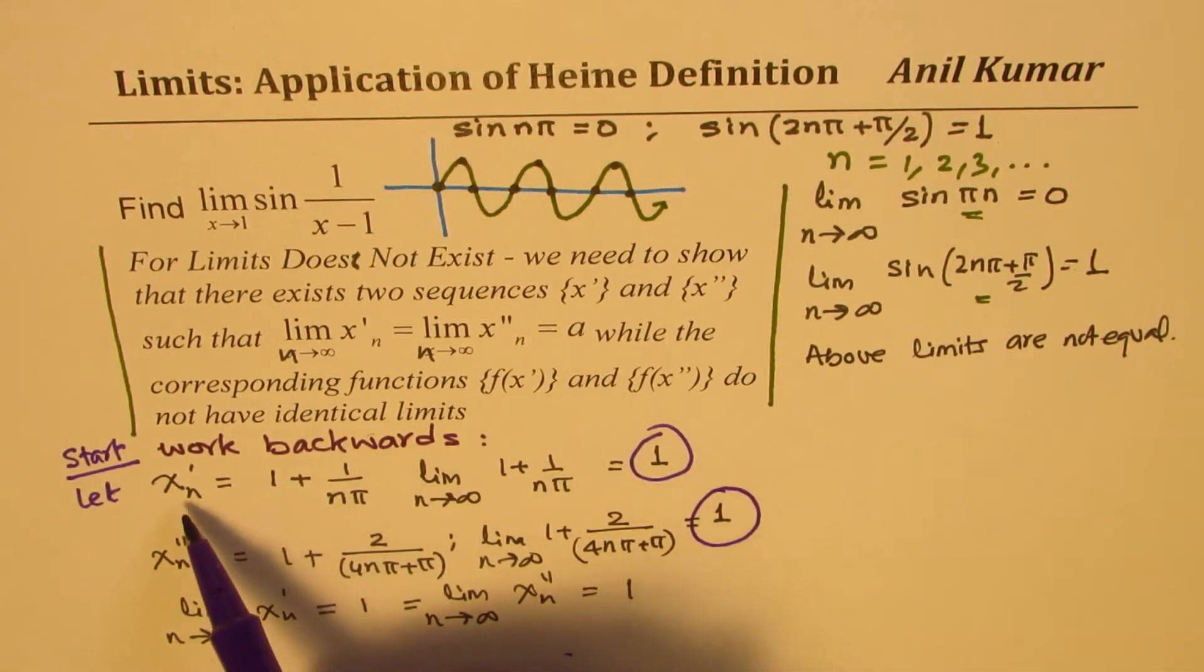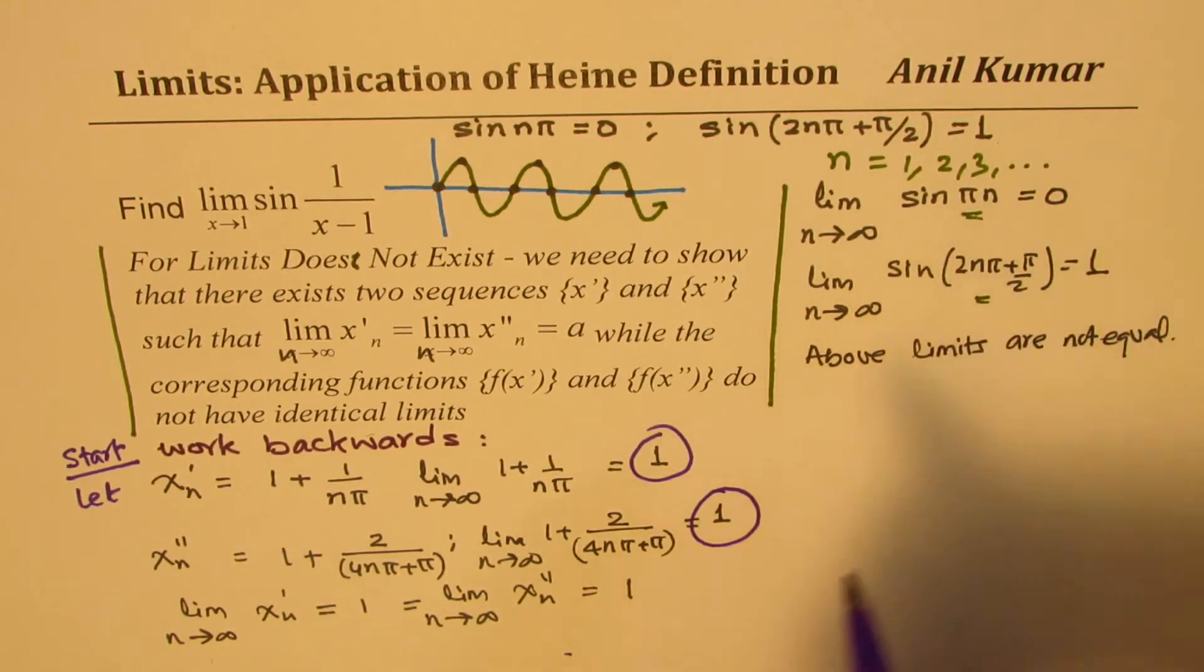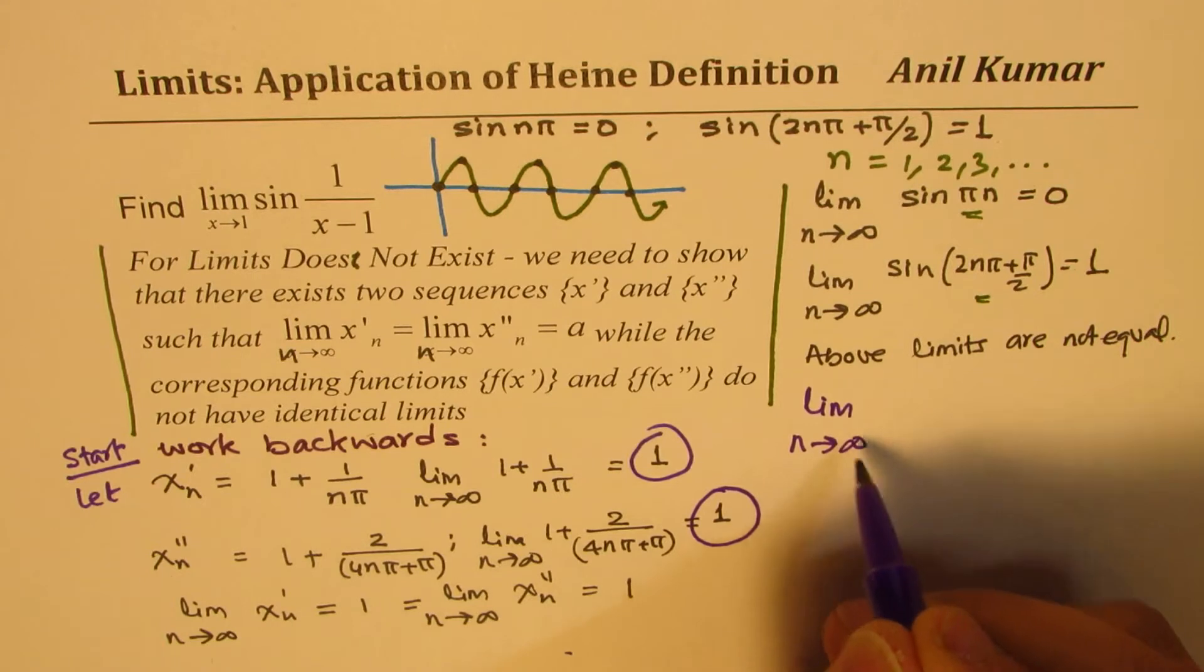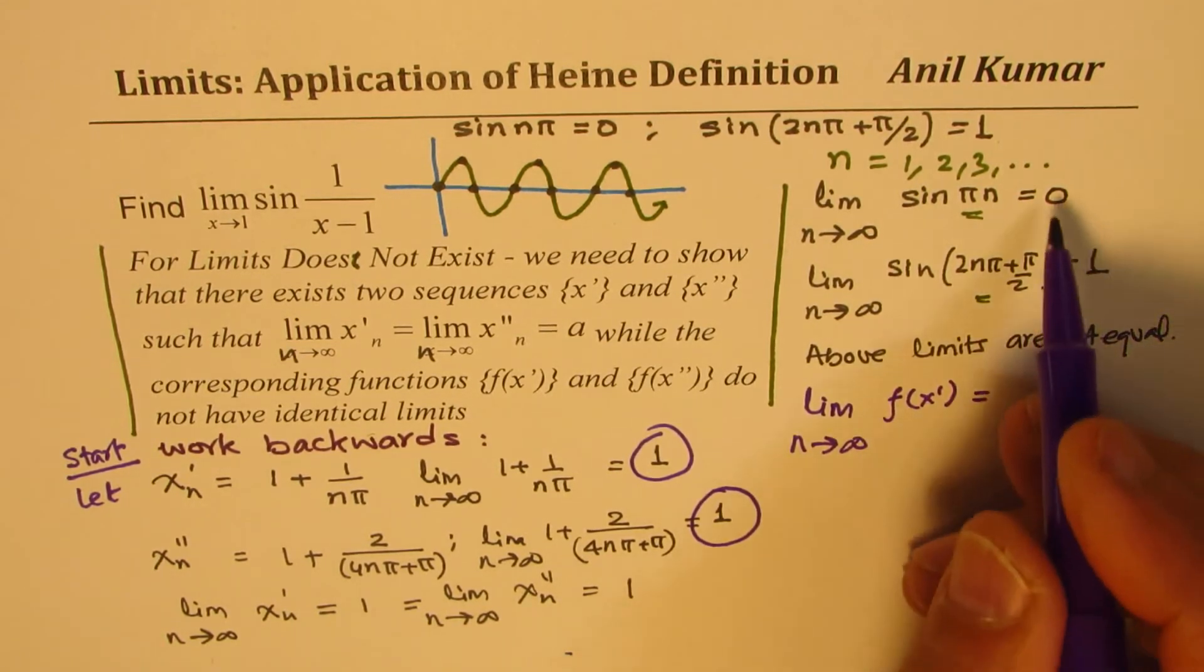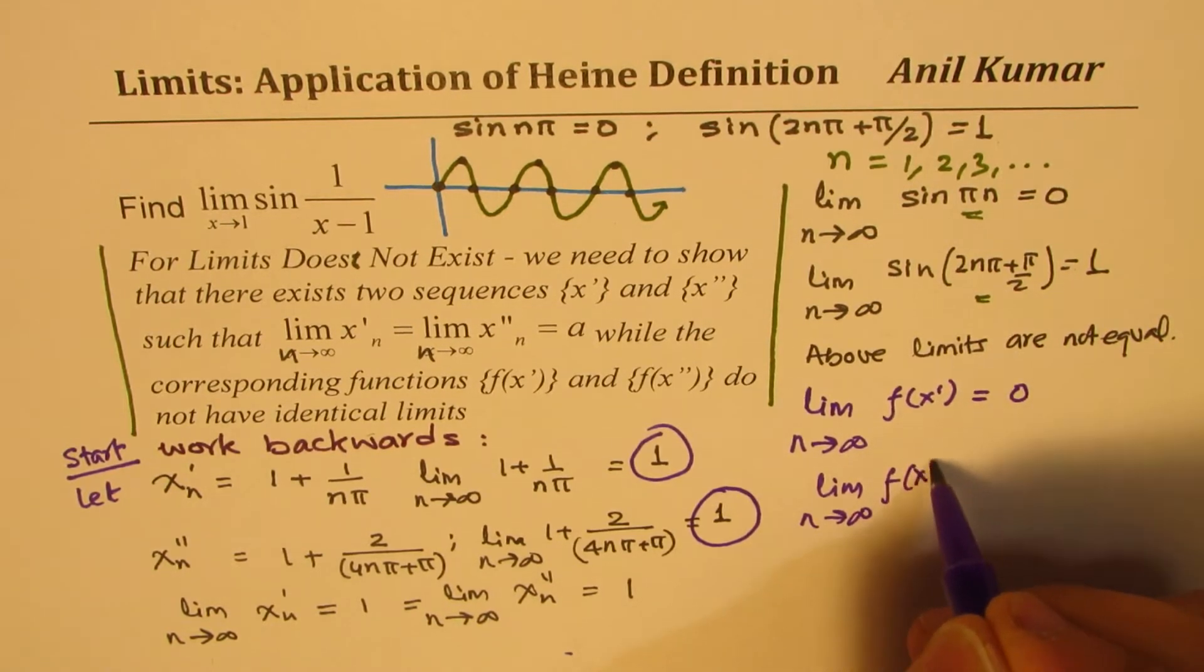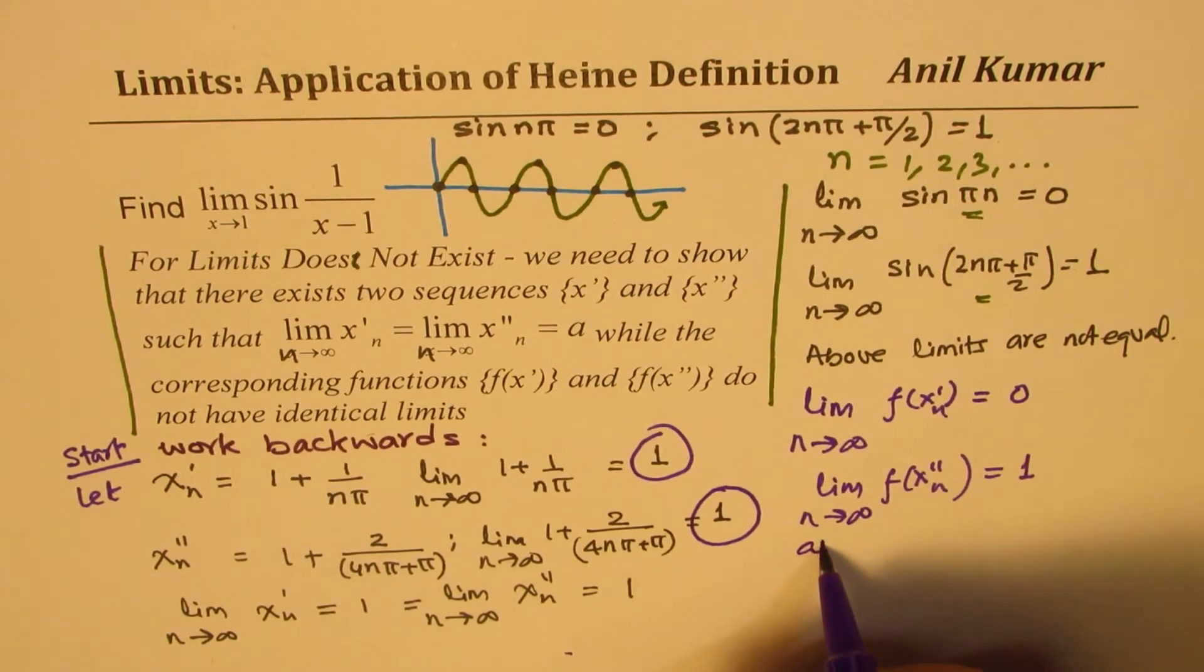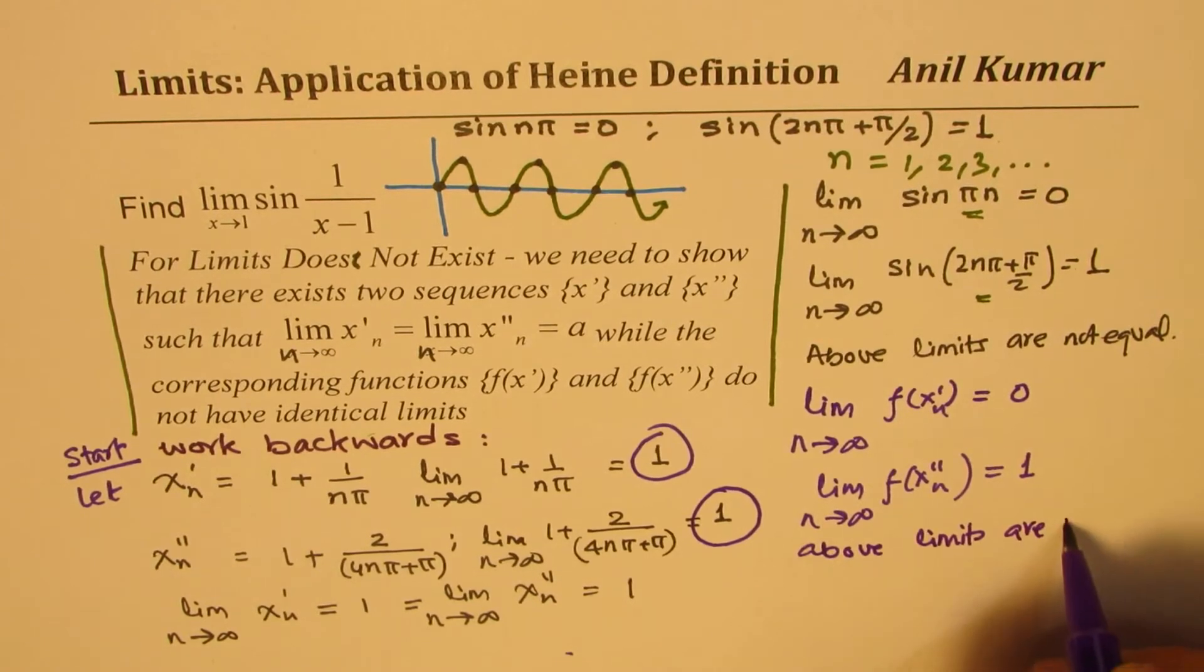Now, for the function f(x_n), we notice that limit when n approaches infinity for the function f(x_n prime) is basically equal to 0. But the limit when n approaches infinity for the function f(x_n double prime) is equal to 1. And these two limits as you have seen here are not equal. They are not same.